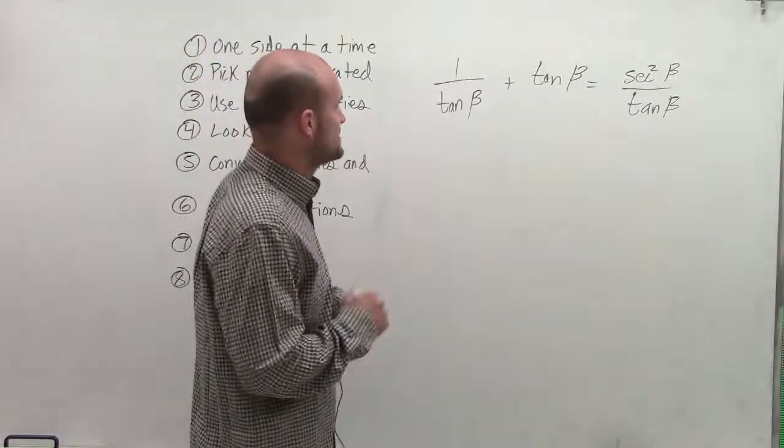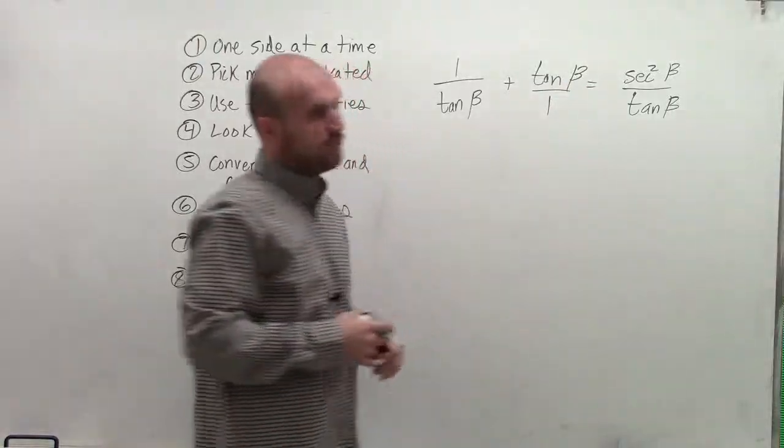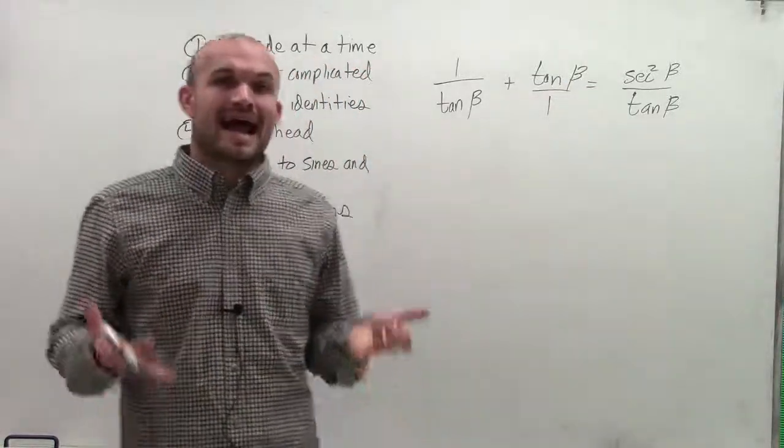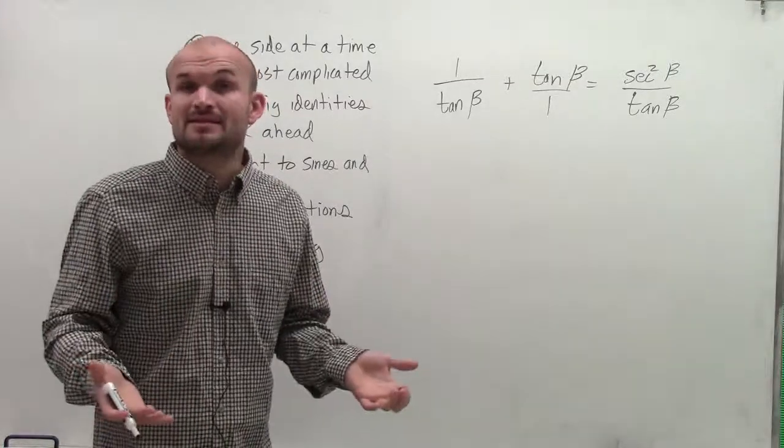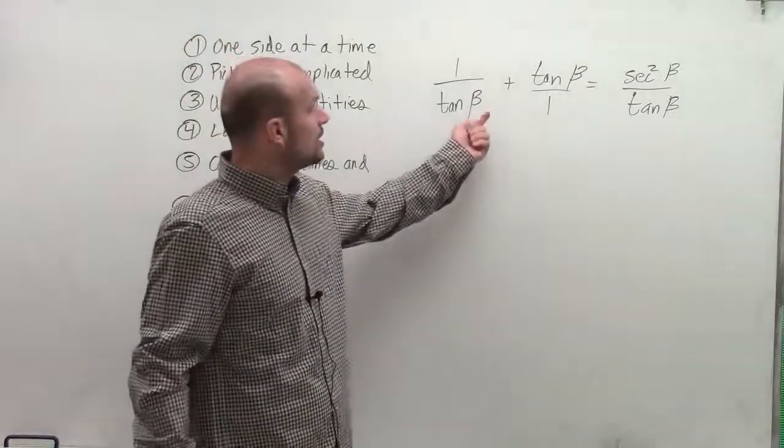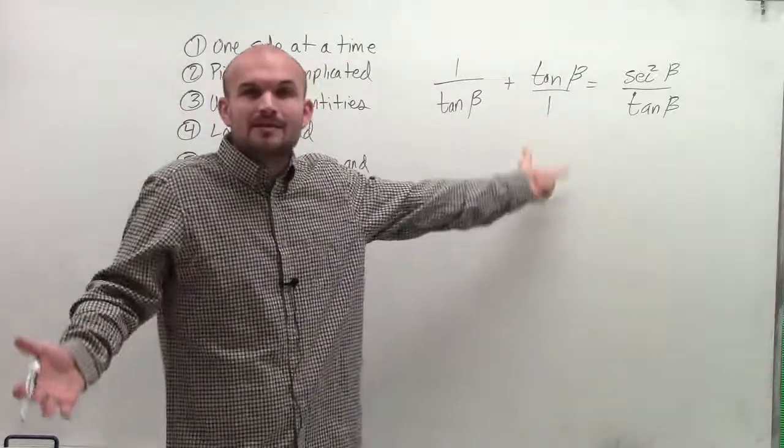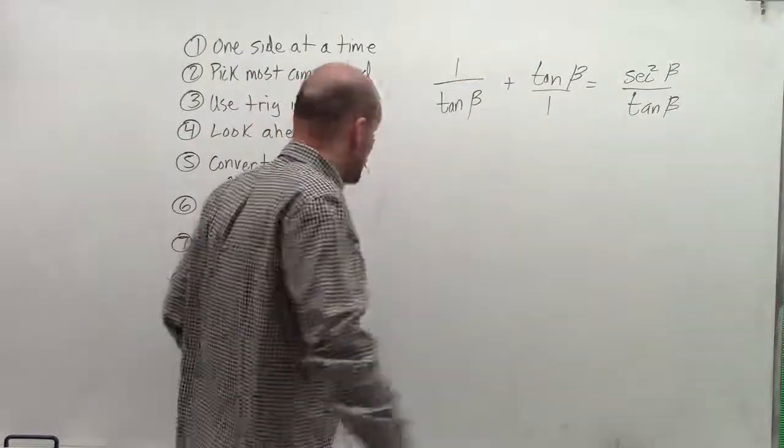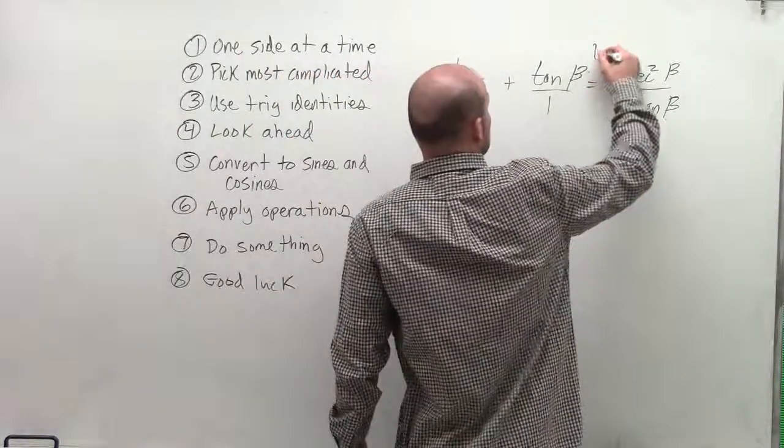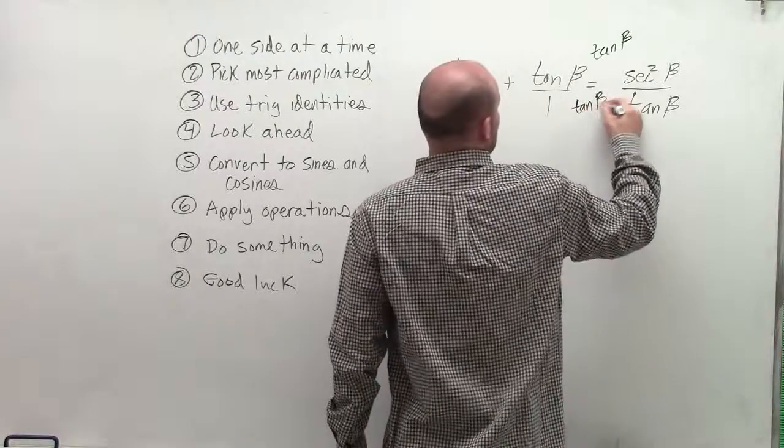So what I have here is I have one over tangent of beta, plus tangent of beta, and that's really over one. So remember, when we're going to be adding fractions, unlike denominators, we have to get them to be the same denominator. So we look at our most common multiple of tangent of beta and 1, and the most common multiple is going to be tangent of beta. Therefore, I'm going to have to multiply tangent of beta on the top and the bottom of this fraction.